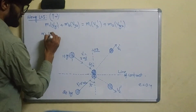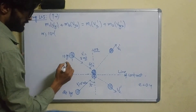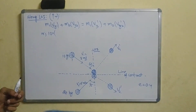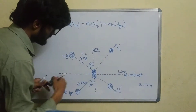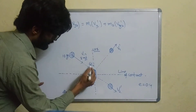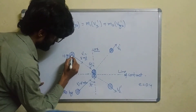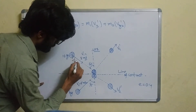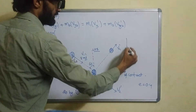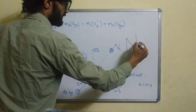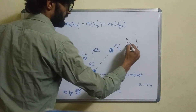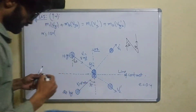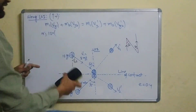Here m1 is 10 kg. The velocity component v1y involves sin 60° or cos 60°, so we apply the 60-degree angle to resolve the components of the initial velocities.